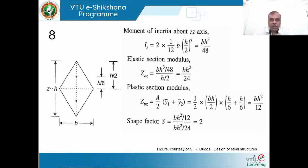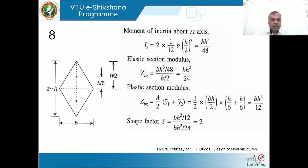Today let us continue with few more problems on determination of shape factor and let us take the example of a rhombus. You can see how the rhombus looks like. As far as the sides of the rhombus are concerned, they are all equal, taken as A.